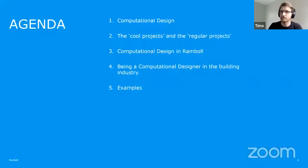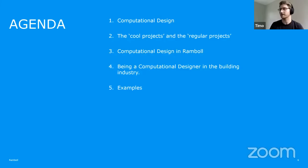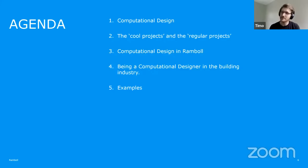I want to take you through five points here, and I'll sprinkle all the points with examples so it doesn't get too dry. First, I want to make sure we're on the same page about what computational design is. I want to talk about the cool projects and the regular projects, how we do computational design in Ramboll, being a computational designer in the building industry — which is not the most fast-moving industry in the world — and then show as many examples as possible to give inspiration on how these methods can be used.